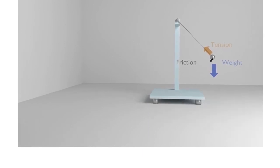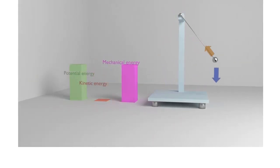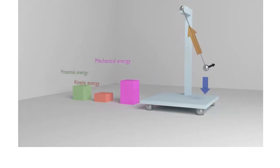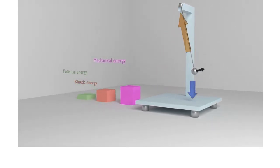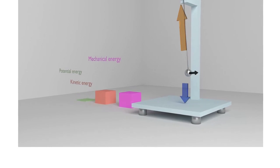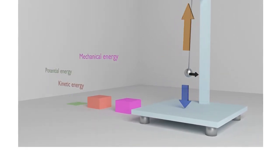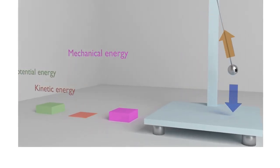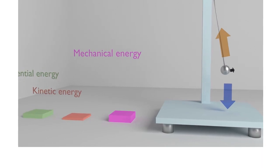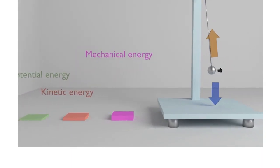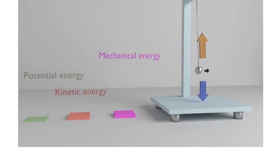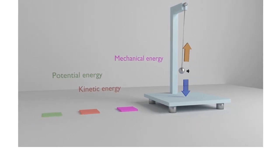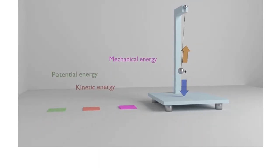Let us see an example of a Damped Harmonic Oscillator: a simple pendulum oscillating in a viscous medium like air. The amplitude is continuously decreasing, the mechanical energy is decreasing, the potential energy is decreasing, and the kinetic energy is decreasing, and finally the bob comes to rest. This kind of harmonic oscillation where damping occurs is called Damped Harmonic Oscillation.